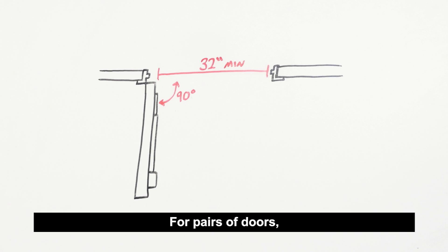For pairs of doors, at least one leaf is required to provide 32 inches of clear opening width. Refer to the model codes for some exceptions to this requirement.